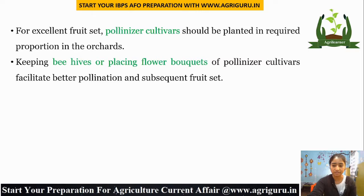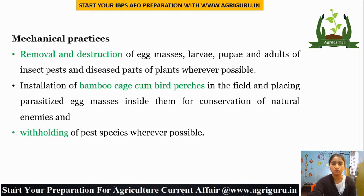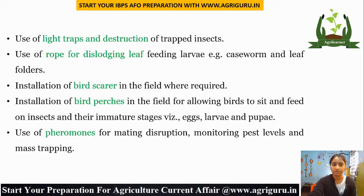Next is Mechanical Practices. Under mechanical practices: removal and destruction of egg masses, larvae, pupa, and adults of insect pests, and diseased parts of plants wherever possible. Installation of bamboo cages and bird perches in the field, and placing parasitized egg masses inside them for conservation of natural enemies. Use of light traps and destruction of trapped insects. Use of rope for dislodging leaf-feeding larvae. Installation of bird scarers and bird perches to allow birds to sit and feed on insects in their immature stages such as eggs, larvae, and pupa. Use of pheromones for mating disruption, monitoring pest levels, and mass trapping.